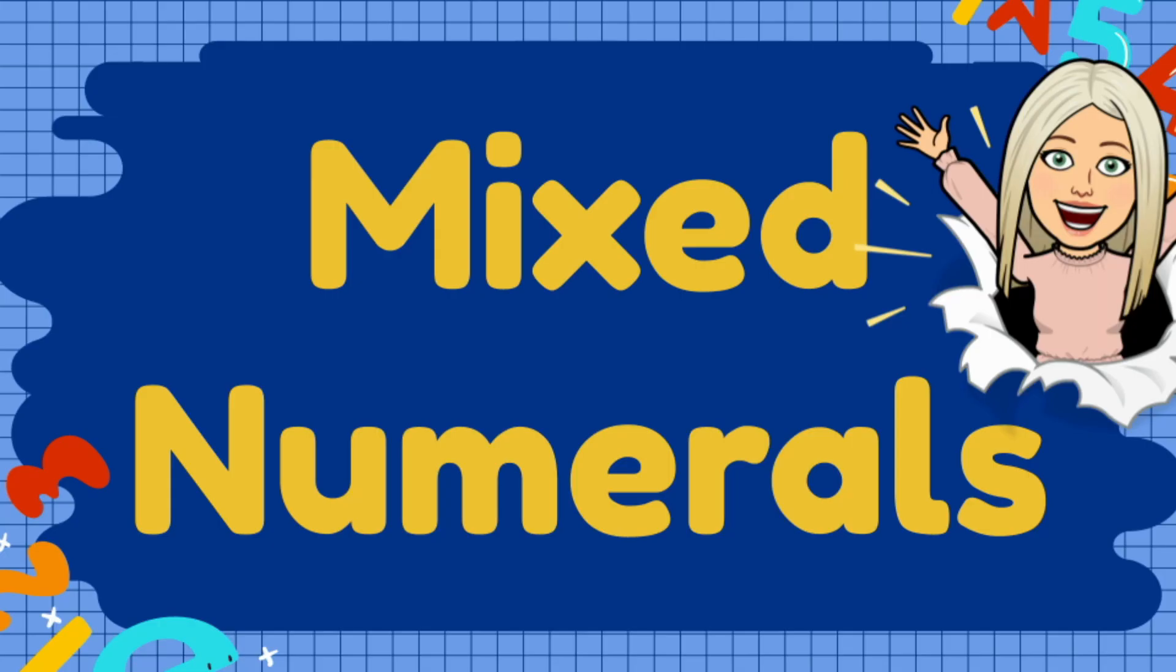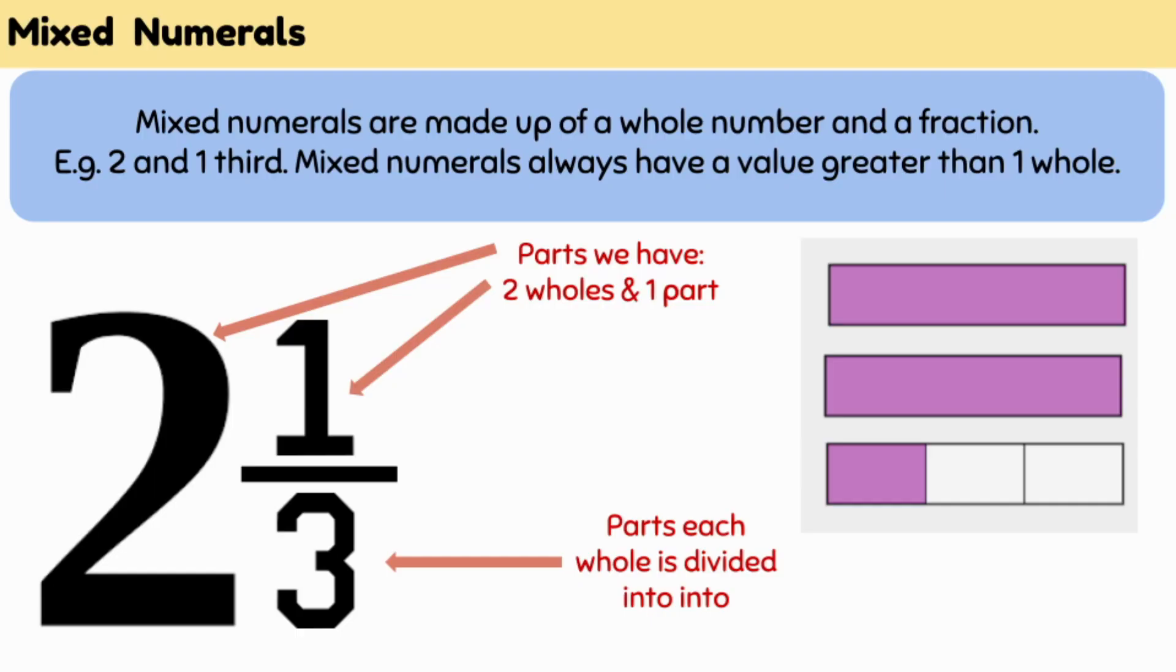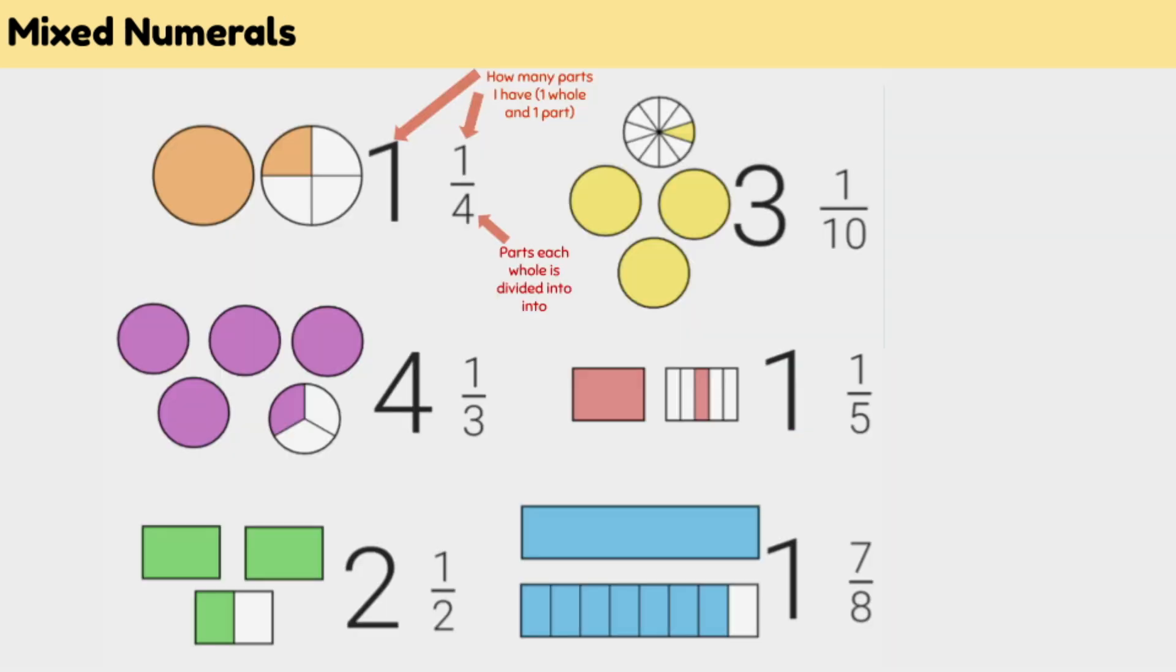What are mixed numerals? Mixed numerals are made up of whole numbers and a fraction. For example, 1 and 2 thirds. Mixed numerals always have a value greater than 1.